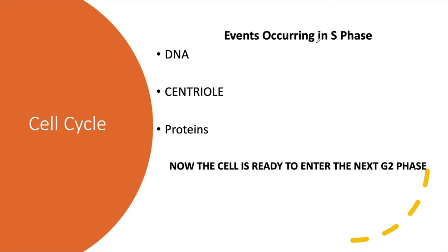In the S phase — synthesis phase — we are synthesizing DNA; DNA replication takes place. In addition, cell growth continues throughout S phase, proteins and enzymes necessary for DNA synthesis continue to be produced, the centrioles also divide (which only happens in animal cells), and histone proteins are also synthesized. If everything is okay, the cell is ready to enter G2 phase.